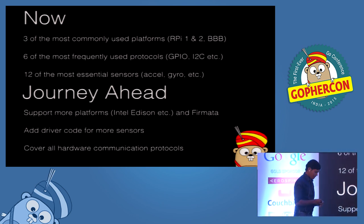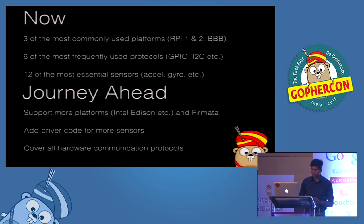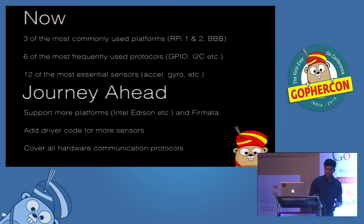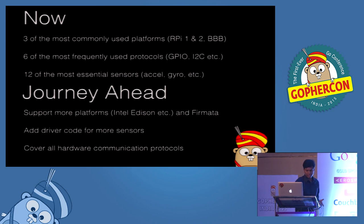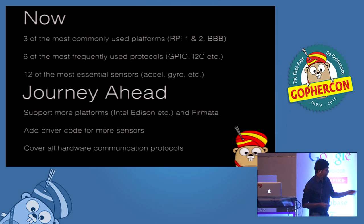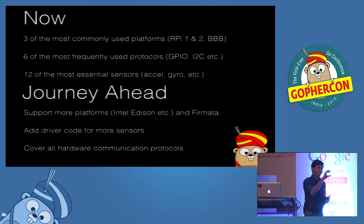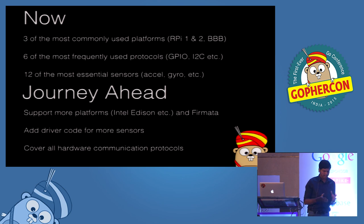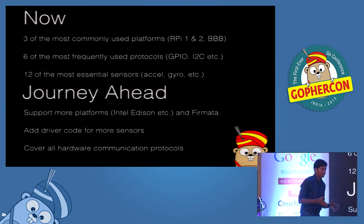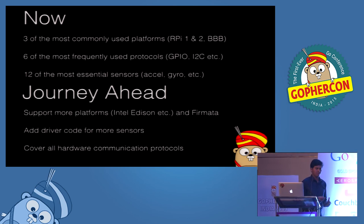What's the journey ahead for Embed? We want to support more platforms. Right now we support most of what Raspberry Pi offers — all the models of Raspberry Pi, including the most recent Raspberry Pi 2. We can add driver code for more sensors — there are multiple sensors, but we're trying to pick those which are widely used and give support for them. And we need to cover all the communication protocols. We've done I2C fairly completely, we have basic SPI working, and we need to cover more protocols like UART and other stuff.